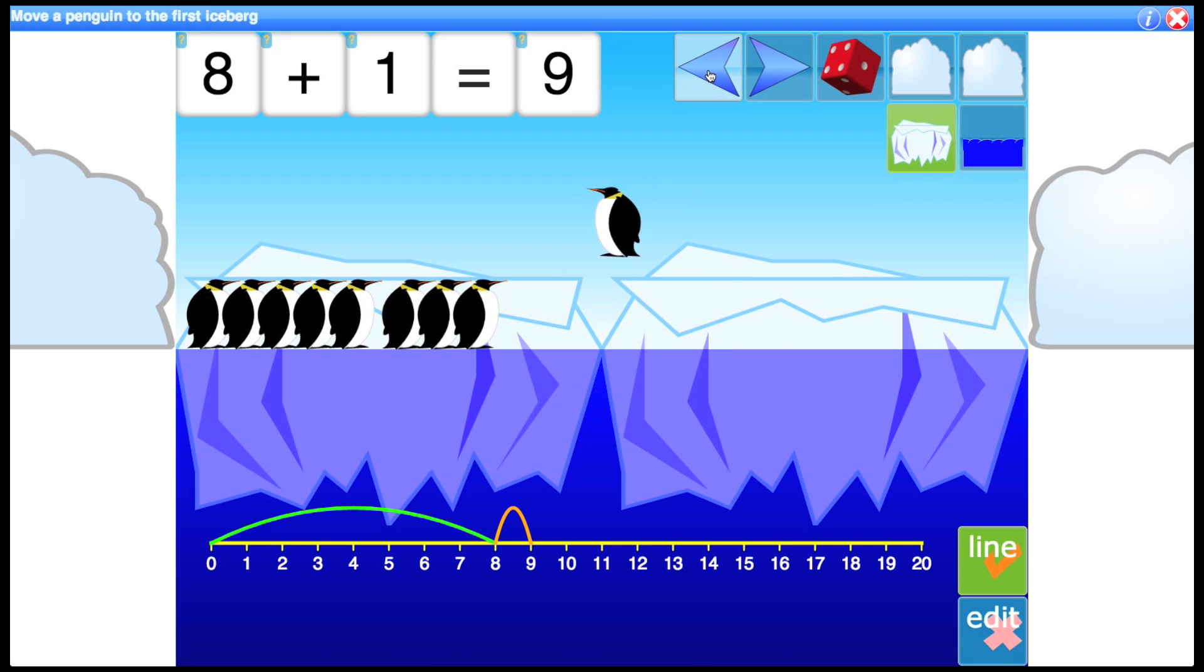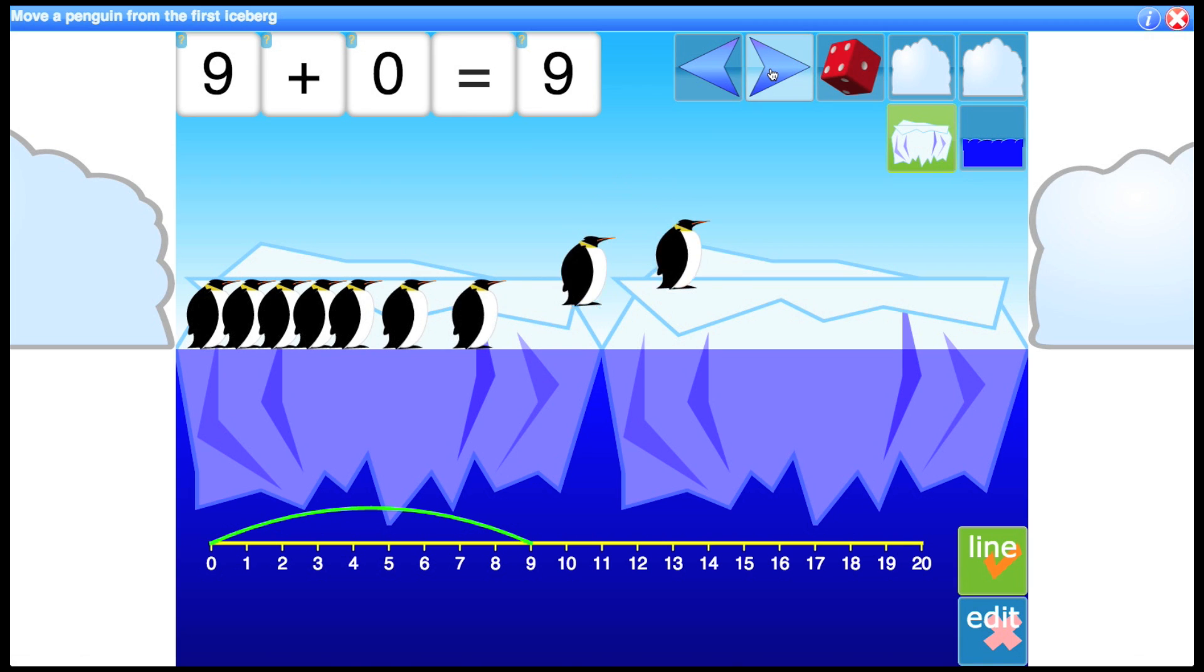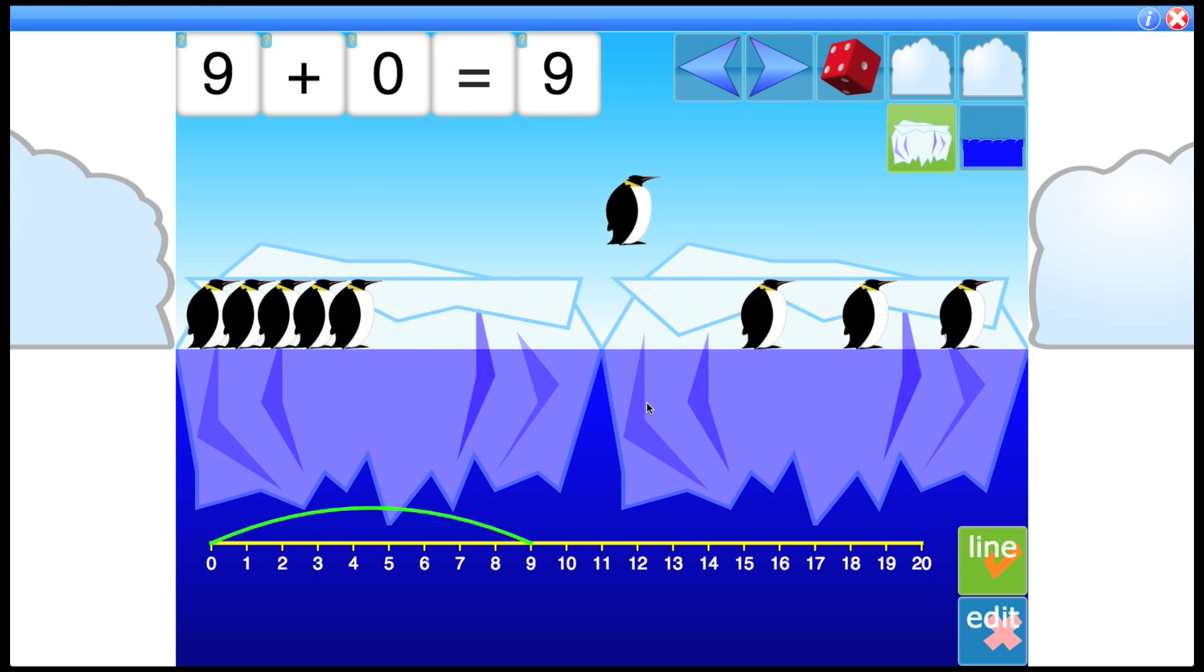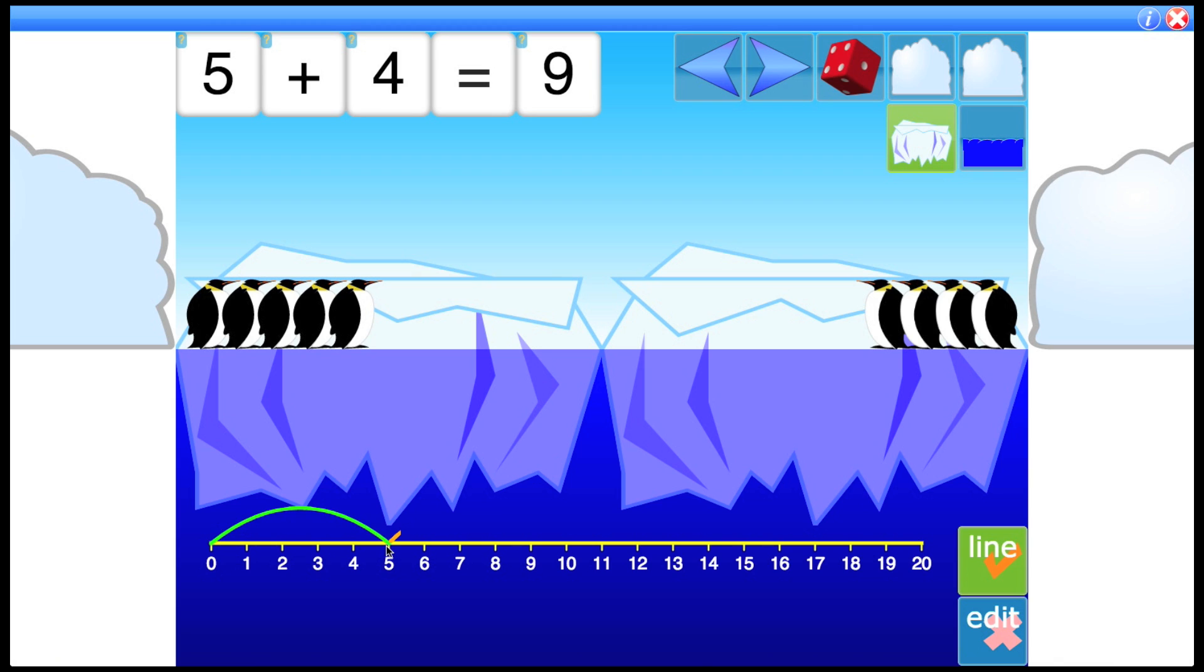If we move this penguin back over, the orange part will disappear because they're all on the first iceberg. So I could send a few over and you can see how it's actually the part in the middle which changes between the lines. We're always stuck on 9.